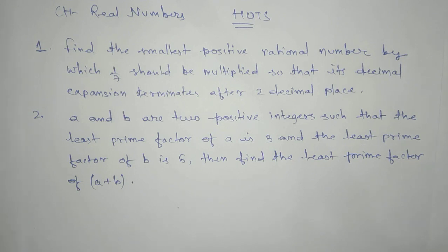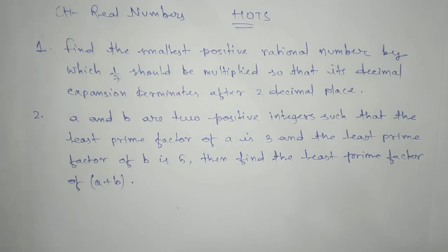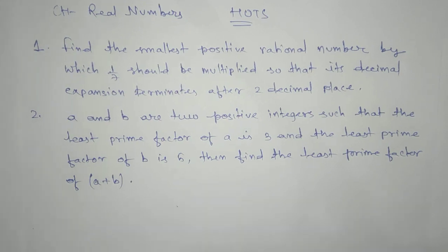Here we have two problems related to real numbers — higher order thinking skill questions. Find the smallest positive rational number by which 1/7 should be multiplied so that its decimal expansion terminates after two decimal places.